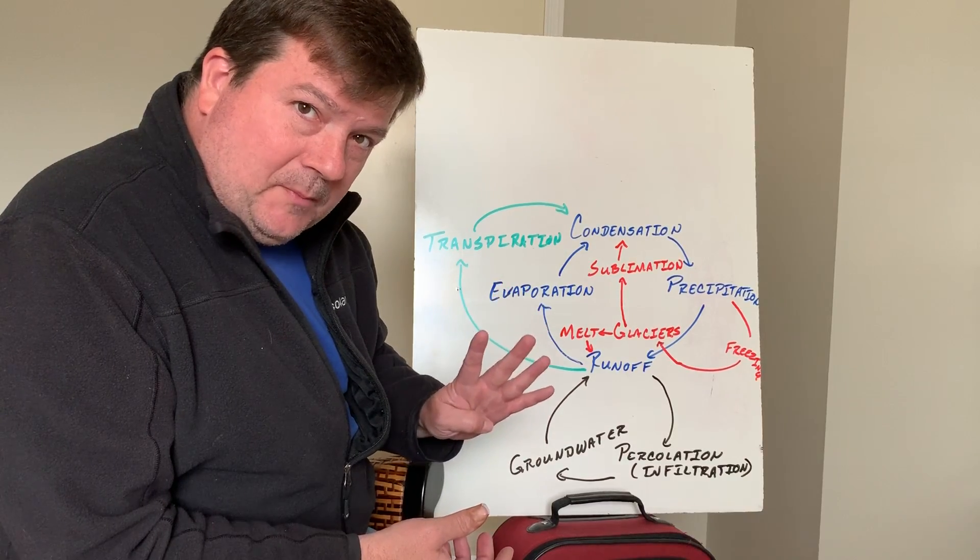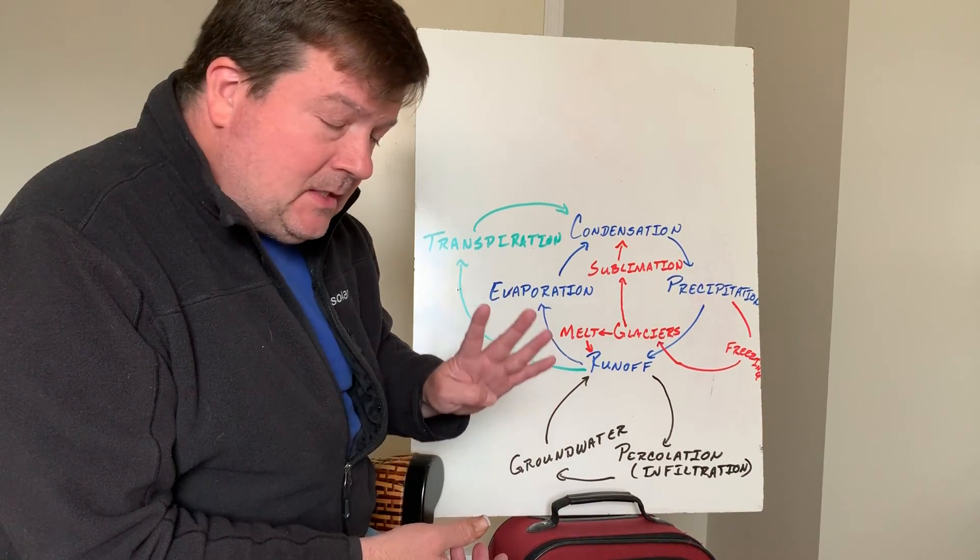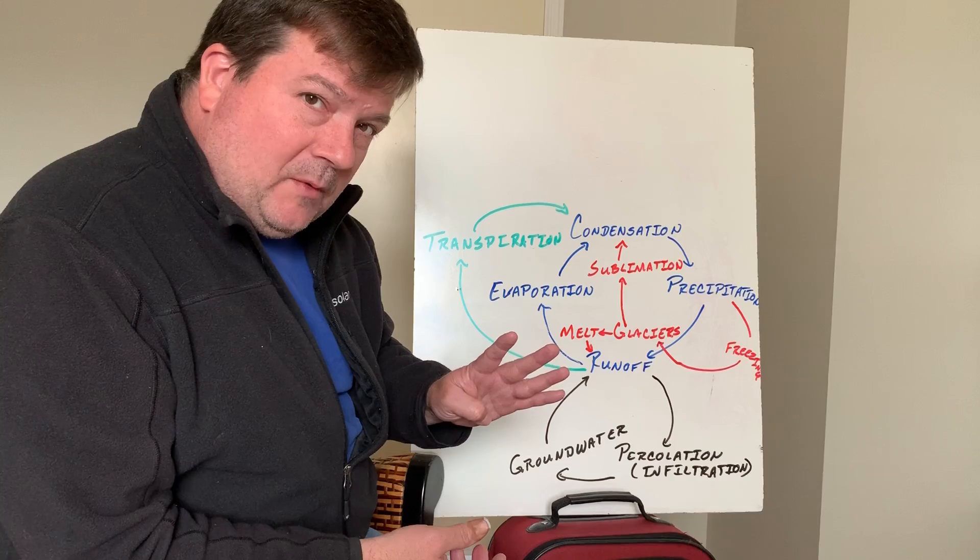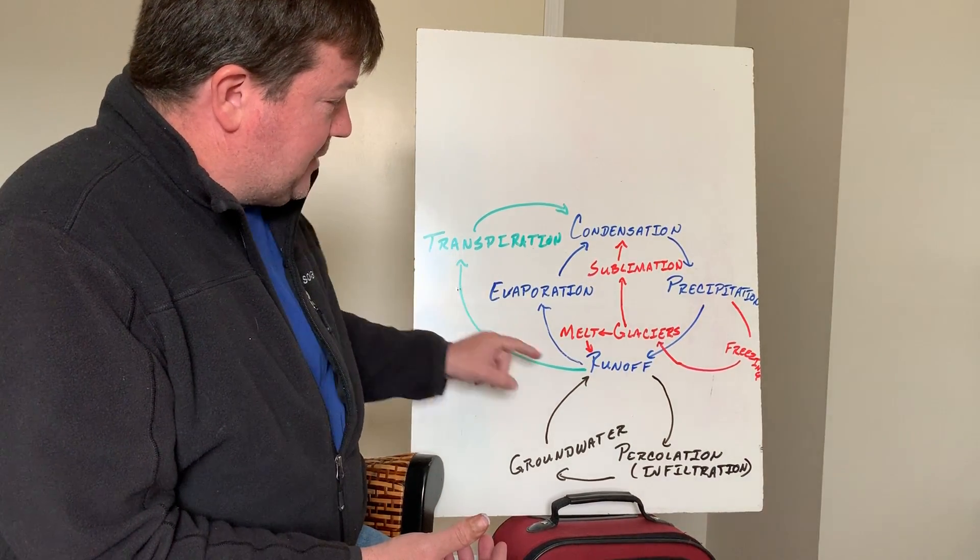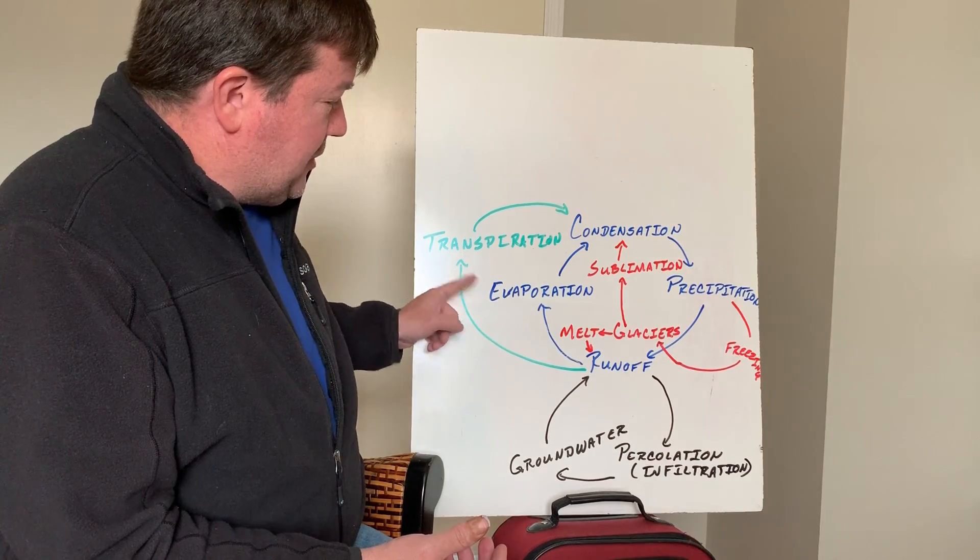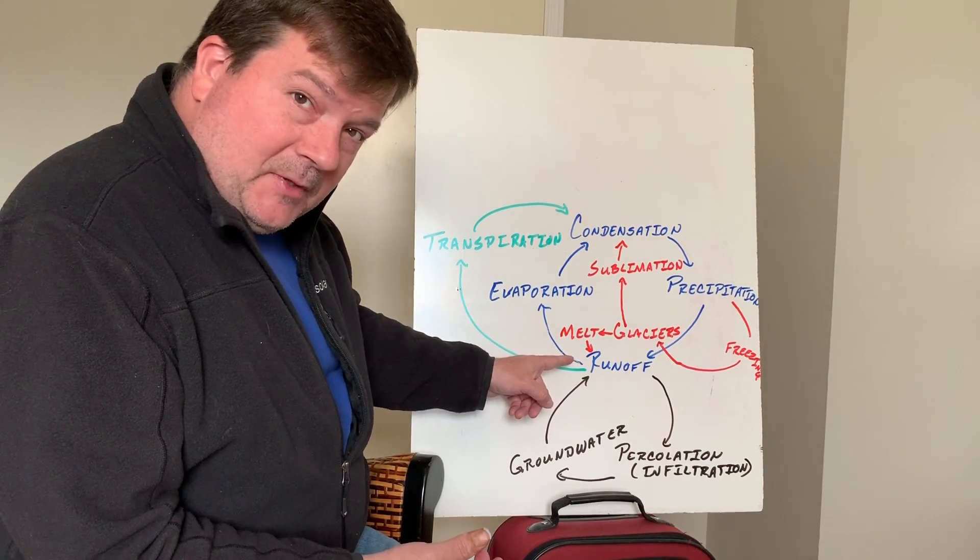Since we're in ecology, we want to have one more that's a really important step. That's this green one over here called transpiration. So transpiration is when runoff is taken up by plants and then the plants transpire or kind of metabolically release that water back into the air.